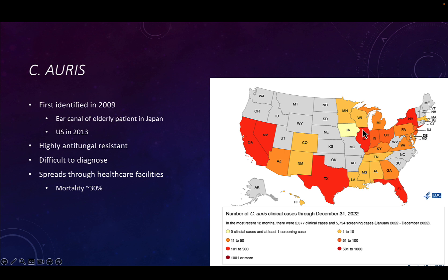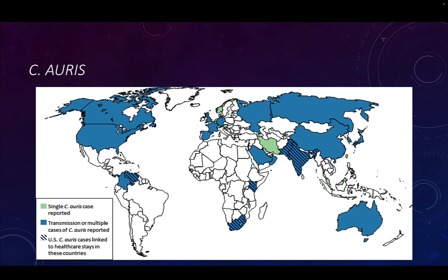Candida auris has been diagnosed in more than half of US states. Last year's data showed nearly 2,400 patients identified with clinical symptoms, and around 5,800 who were screened and found to be carrying it as part of their skin or genital microbiome. Worldwide it has infiltrated a number of different countries. Countries with hash marks — like South Africa and India — indicate that a US patient is thought to have acquired the infection in one of those countries.